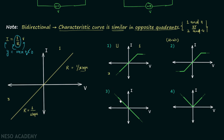In the third example, the characteristics curve is in the second quadrant and the fourth quadrant, and the curve is similar in both the second and fourth quadrants. Therefore, this particular curve is the curve of a bidirectional element. The fourth example is also homework for you.